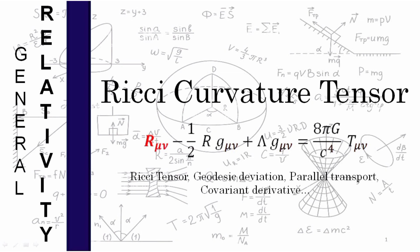In this video we are going to talk about the Ricci curvature tensor. Ricci tensor is the first component we encounter when we start learning Einstein's field equations and the general theory of relativity. In earlier videos on general relativity, I have not covered the Ricci tensor in detail. In this video we are going to cover Ricci tensor, its geometrical properties, and the mathematics required to get this concept clear.